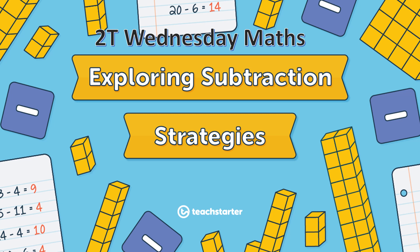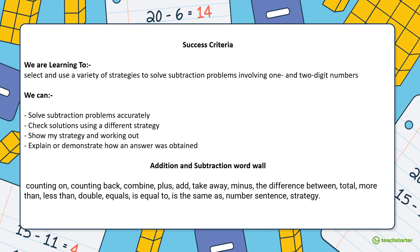There are lots of options to catch up if you don't get it all done. To be successful, we're going to be learning and hopefully mastering how to select and use a variety of strategies to solve subtraction problems involving one and two digit numbers. We can solve subtraction problems accurately, check solutions using a different strategy, show our strategy and working out, and explain or demonstrate how an answer was obtained. We've also got our word wall that we'll continue to use as we describe our maths problems this week.